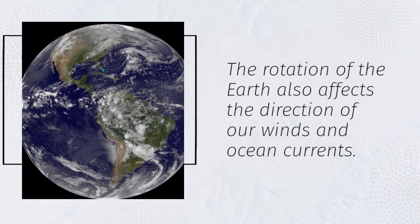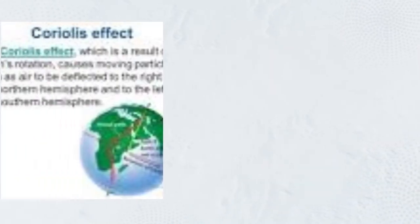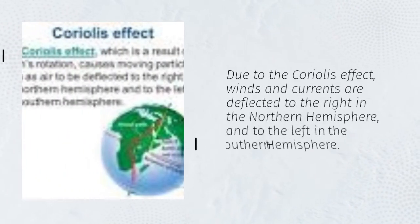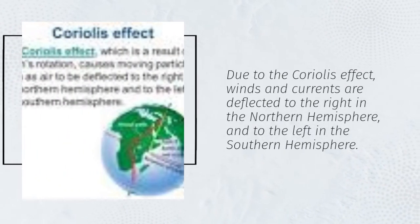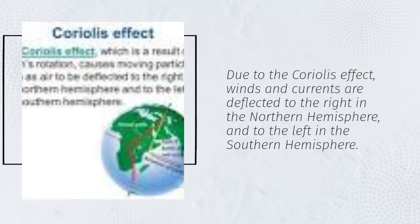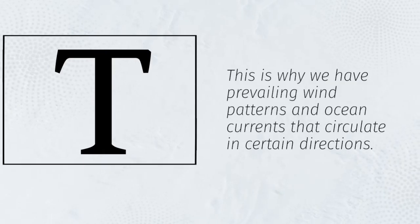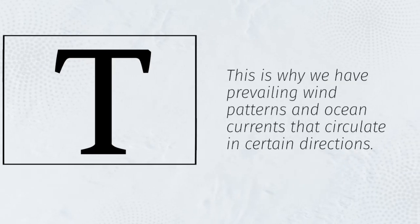Due to the Coriolis effect, winds and currents are deflected to the right in the Northern Hemisphere and to the left in the Southern Hemisphere. This is why we have prevailing wind patterns and ocean currents that circulate in certain directions.